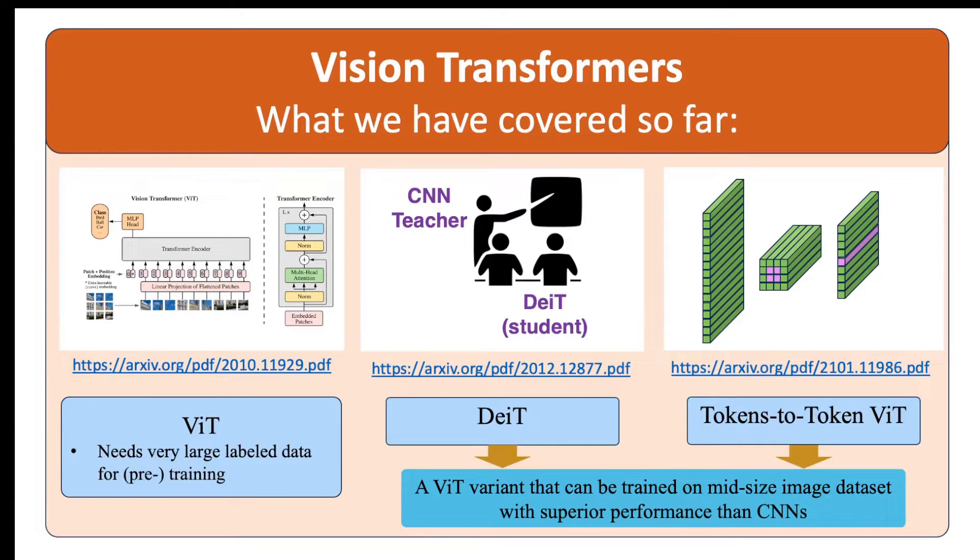So far we have covered three vision transformer models. First we started with the original ViT which splits the input image to a sequence of 16 by 16 patches. The vanilla ViT works well when trained on very large datasets but on mid-sized datasets its performance is lower than CNN models. After that we covered two variants called DeiT and Tokens-to-Tokens ViT that aimed to make ViT work well even when trained on mid-sized datasets.